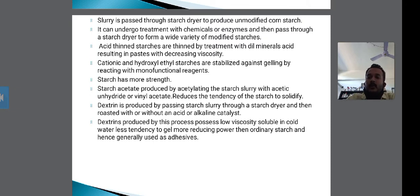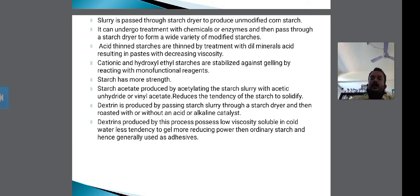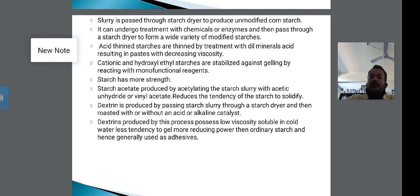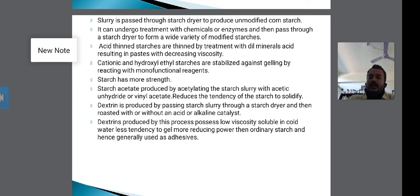The starch slurry can undergo treatment with chemicals or enzymes, then pass through the starch dryer to produce a wide variety of modified starches. Acid-thinned starches are thinned by treatment with dilute mineral acid, resulting in a paste with decreasing viscosity.